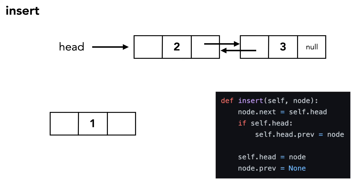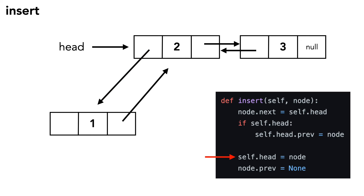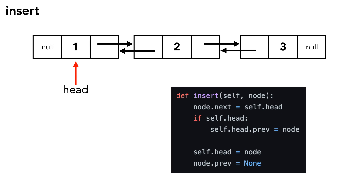Let's discuss inserting a node at the front of our list. We want to insert the object on the left that has a data value of 1. First, we set the node's next pointer equal to the head object. Next, we set the head object's previous pointer equal to the node. We then set the head pointer to the recently added node. Lastly, we set the node's previous pointer to null. Our node is now added into the list. This is a constant time operation, so it has a runtime of O(1).